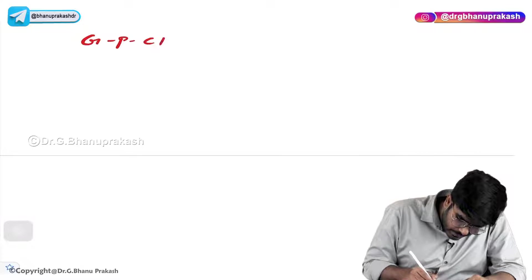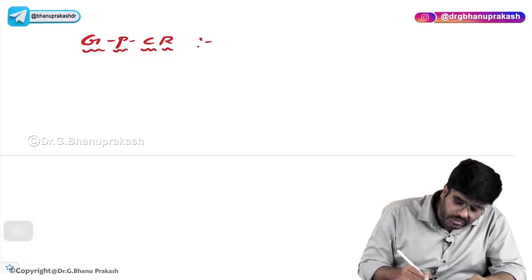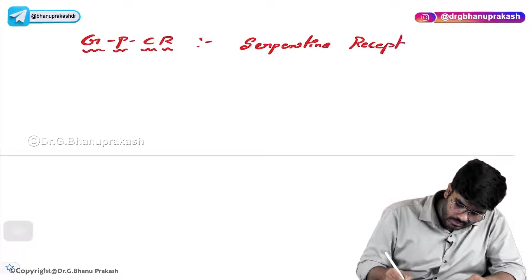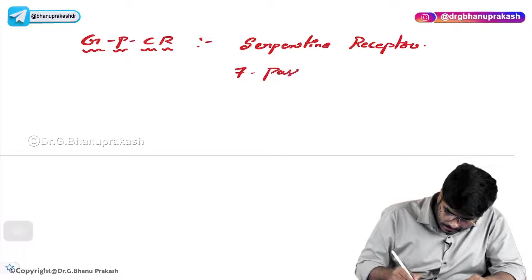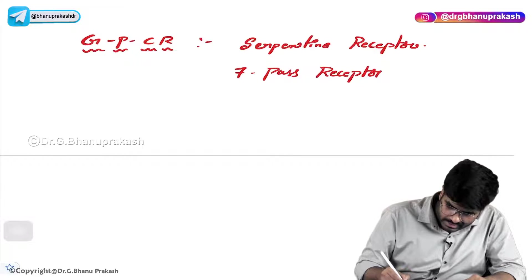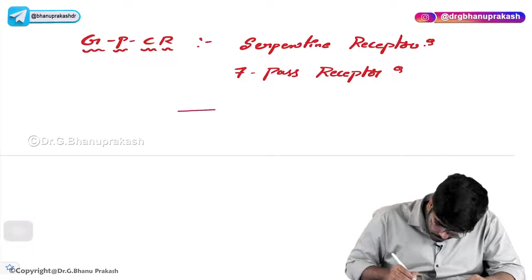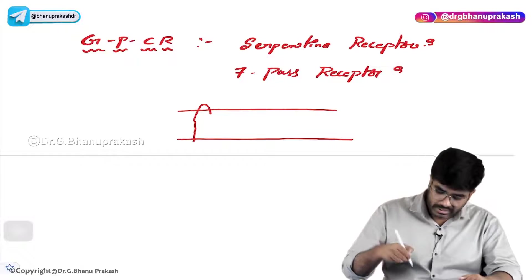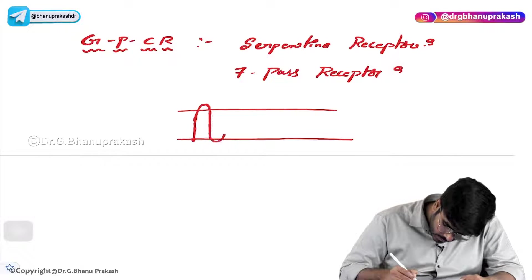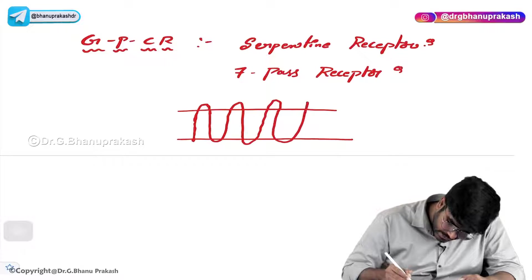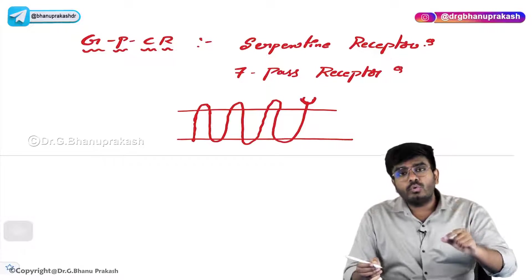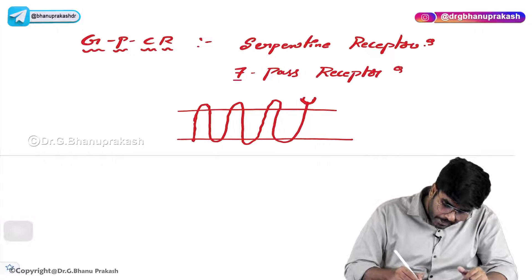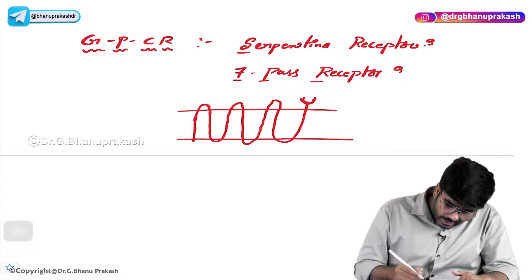The G protein coupled receptor is also known as the serpentine receptor or 7-pass receptor. If I show you the lipid membrane — this receptor has a very interesting structure, just like a snake. It passes through the cell membrane 1, 2, 3, 4, 5, 6, and 7 times. So this receptor passes through the cell membrane 7 times, which is why it is called the 7-pass receptor, and because it looks like a snake, it is called the serpentine receptor.